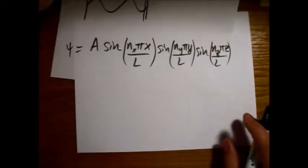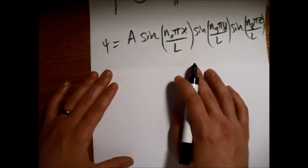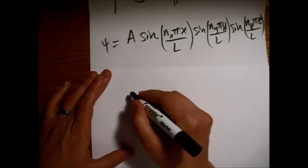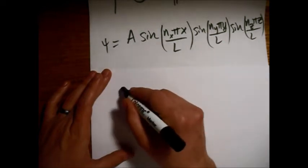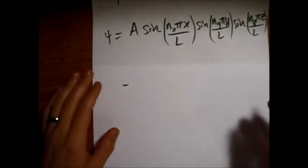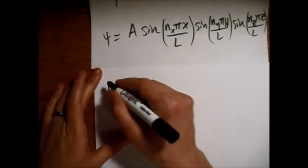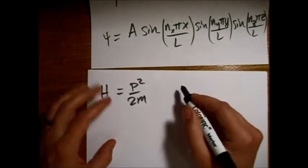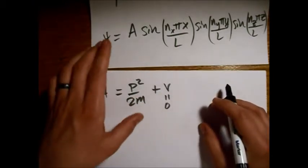So to get the energy, we're going to apply the Hamiltonian to this wave function. So in three dimensions, our Hamiltonian is p squared over 2m, plus the potential, which this part will be zero inside the box.